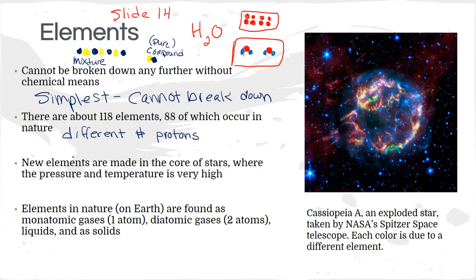Only 88 of the elements occur in nature; the others are man-made. Where in nature do elements get made? The answer is in the heart of a star. This image from the Spitzer Space Telescope shows an exploded star where each color represents a different atom — blue is probably hydrogen, red could be calcium, green could be copper. In young stars like our Sun, they start out with hydrogen, which is the simplest element with only one proton.